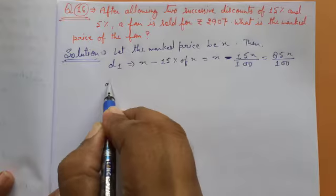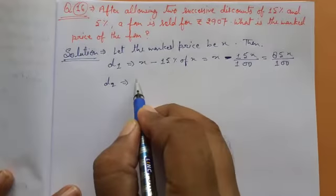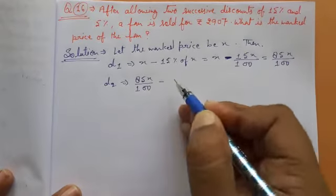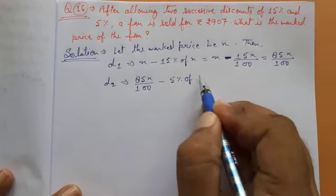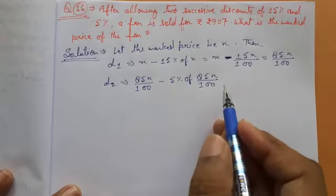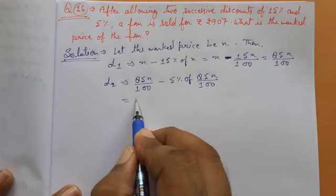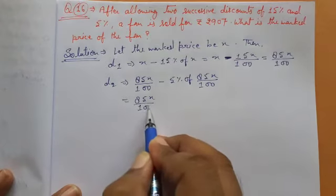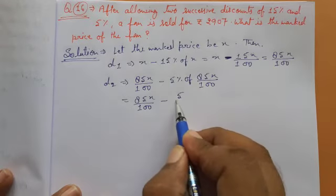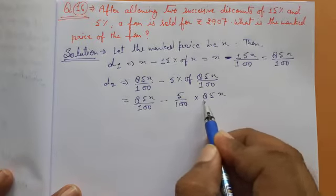After that we need to calculate D2. For D2, we take 5% of this number. So 85X upon 100 minus 5% of 85X upon 100. We need to solve it, so it will be 85X upon 100 minus 5 upon 100 into 85X upon 100.